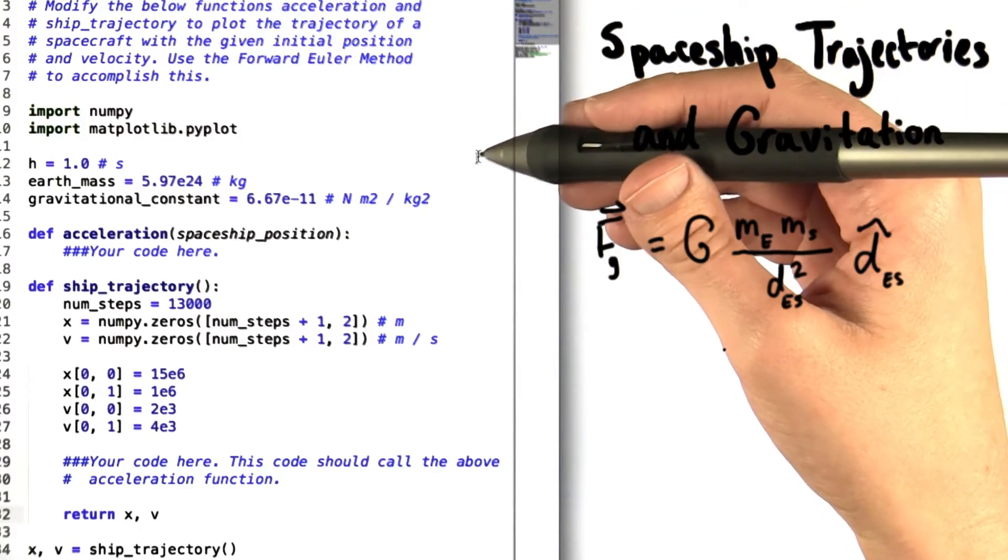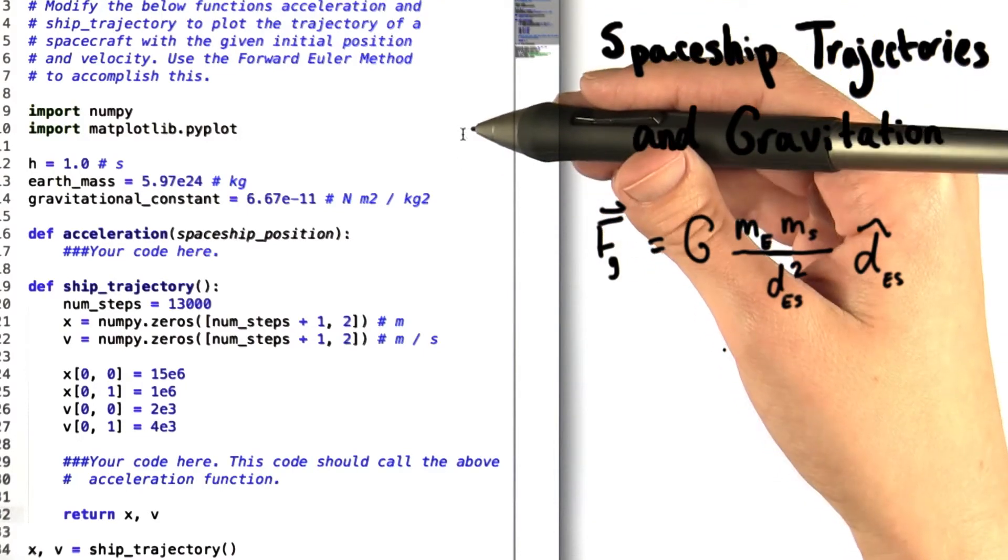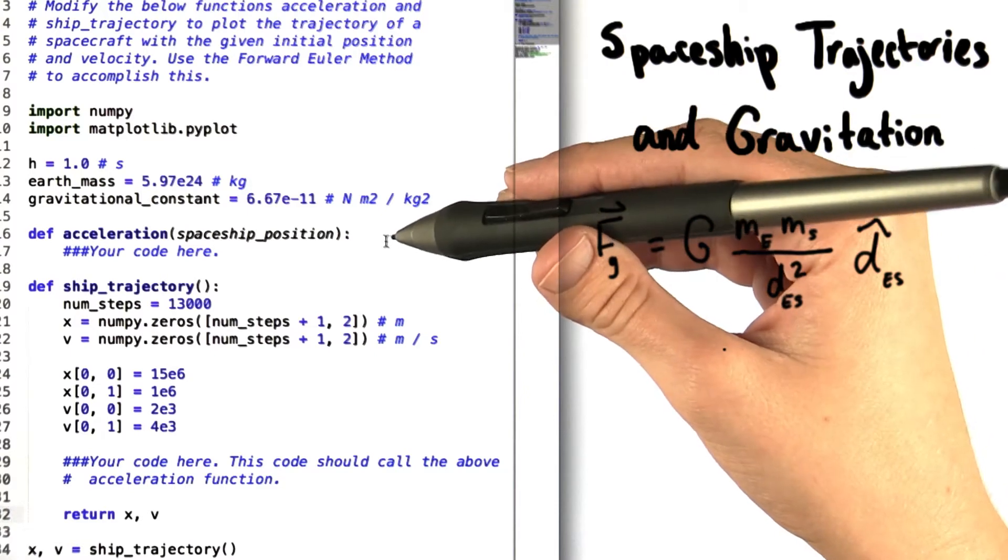In this problem set, you're going to plot the trajectory of a spaceship by creating functions for its acceleration and its trajectory.